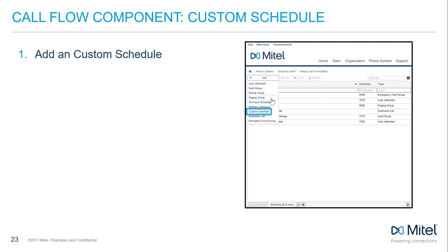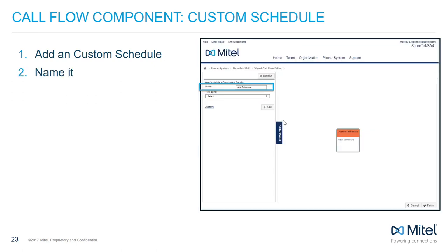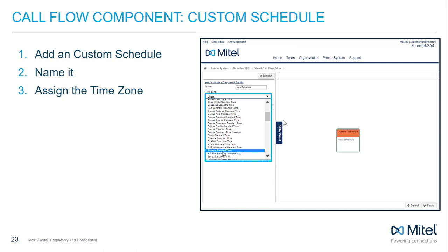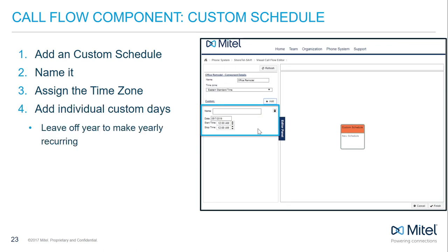Add a custom schedule by selecting Add Custom Schedule from the dropdown. Name it something unique and add a time zone. Click Plus Add to add a line to the schedule and name the individual custom event. Use the date field to establish the date and set the time range. To make the custom event recur yearly, simply remove the year from the date — if only the day and month are included, the custom event becomes yearly; if day, month, and year are all included, it becomes a one-time event.